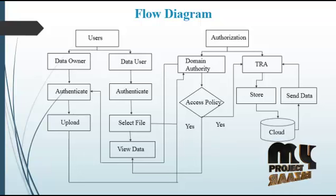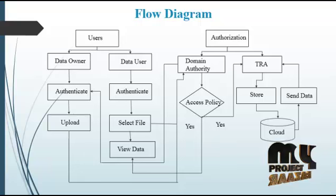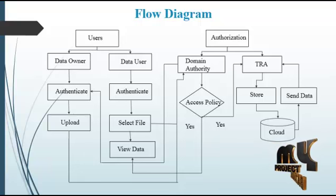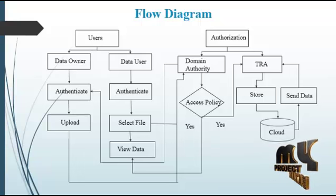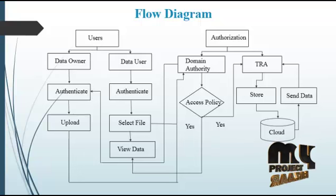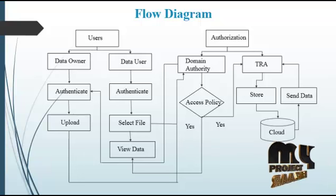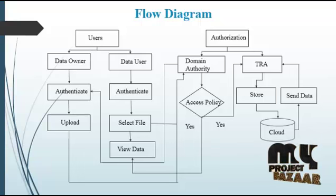For authorization, the domain authority receives the request and checks the access policy. For example, if the data user is a student, they can only view files uploaded by staff, not by doctors. This access policy is checked by the domain authority and then forwarded to the DRA.